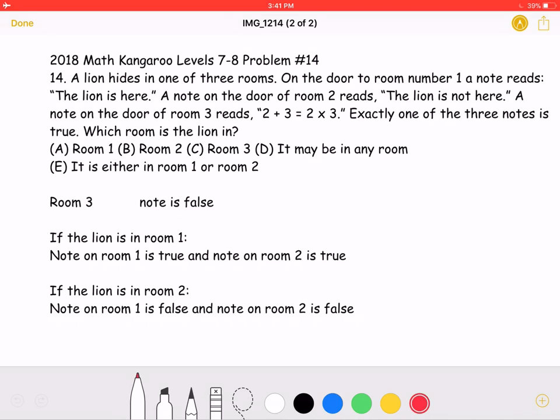Let's start by writing that the note on room 3 is false, as 2 plus 3 is not equal to 2 times 3. And let's remember that the problem states that exactly one of the three notes is true. So we know that the note on room 3 is not true, so one of the other two must be true.